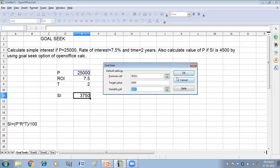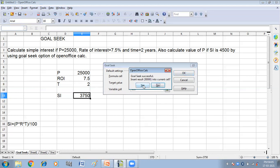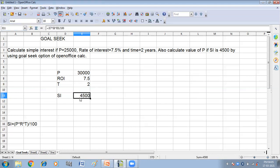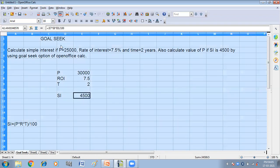Then click on OK, yes. Now you can see we have got simple interest 4500 by changing the principal, that is 30,000.